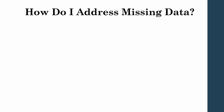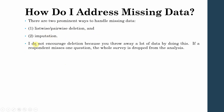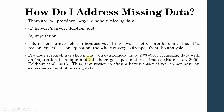If you do have missing values, how do you address them? There are two prominent ways to handle missing data: listwise or pairwise deletion, and imputation. Deletion is not encouraged because you throw away a lot of data — if a respondent misses one question, the whole survey is dropped from the analysis. Previous research has shown that you can remedy up to 20–30% of missing data with an imputation technique and still have a good parameter estimate.